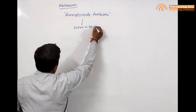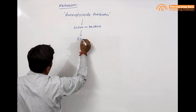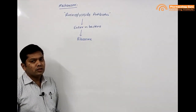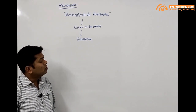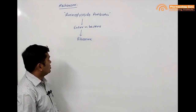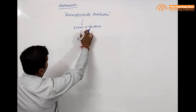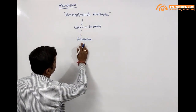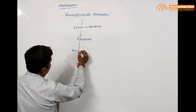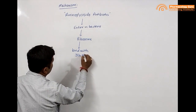Their site of action is ribosomes. Their entry into the bacteria is dependent on oxygen, so they are effective only in aerobic microorganisms. Aminoglycoside antibiotics enter into the bacteria in an oxygen-dependent manner, and their site of action is the ribosome.